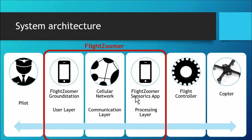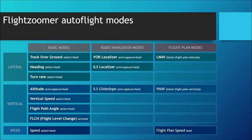Any sent command is confirmed back to the ground station, so perfect awareness can be provided to the pilot about the state of the autopilot and communication. The communication itself is stateless, so even when connecting with a second ground station, the ground-based and airborne systems are immediately in sync.